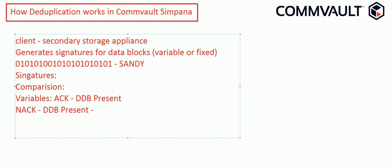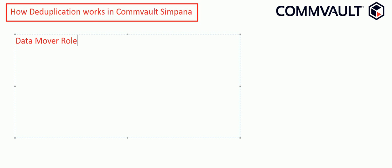During the deduplication process, two different media agent roles are used; these roles can be hosted by the same or different media agents. The first is the Data Mover role — a media agent that has write access to the disk libraries where the data blocks are stored. The second is the Deduplication Database role — the media agent that has access to the DDB storing the data block signatures. When you create a deduplication database, these two different roles can be assigned to media agents.